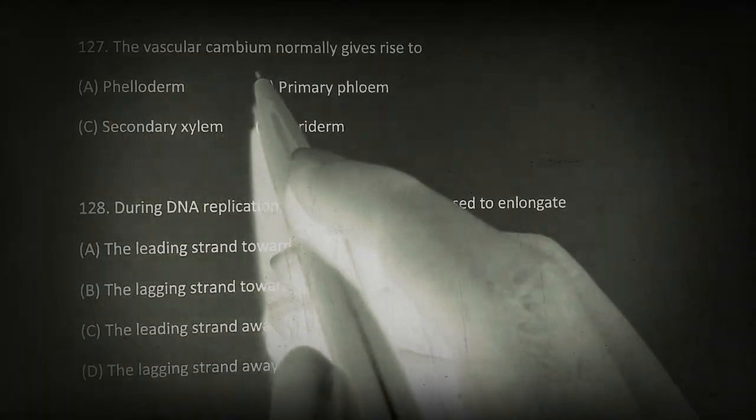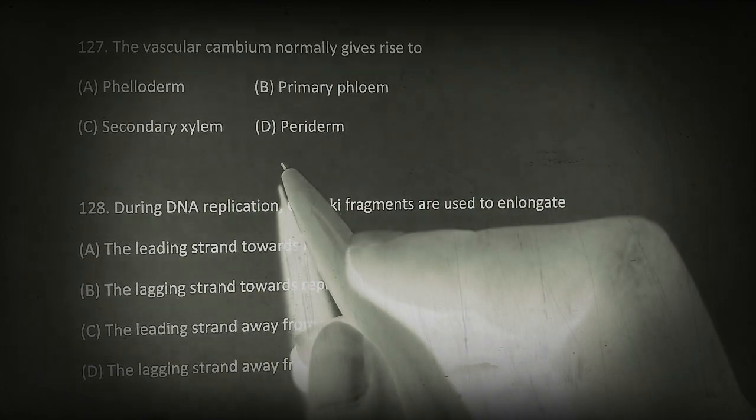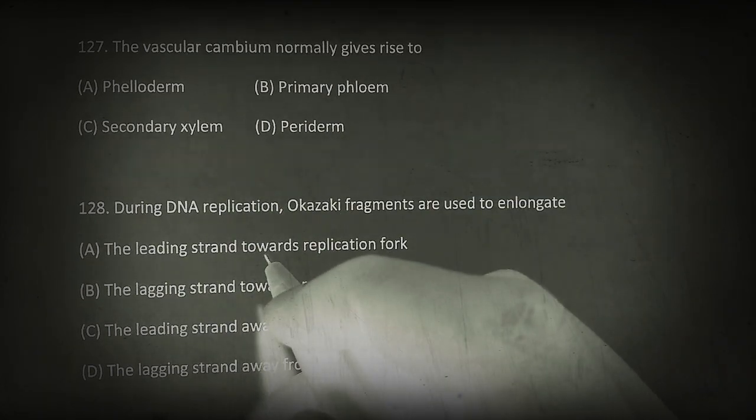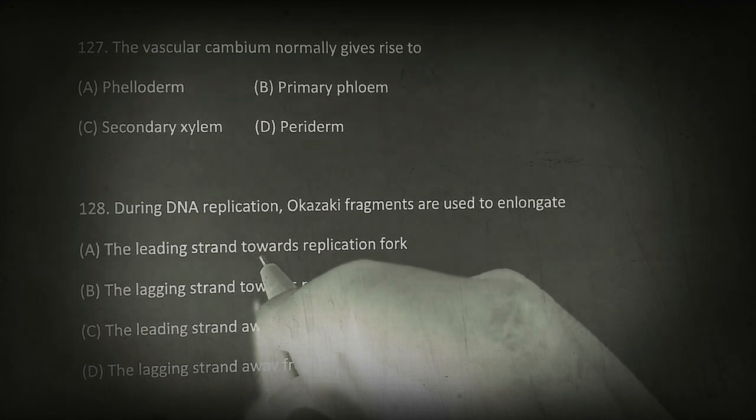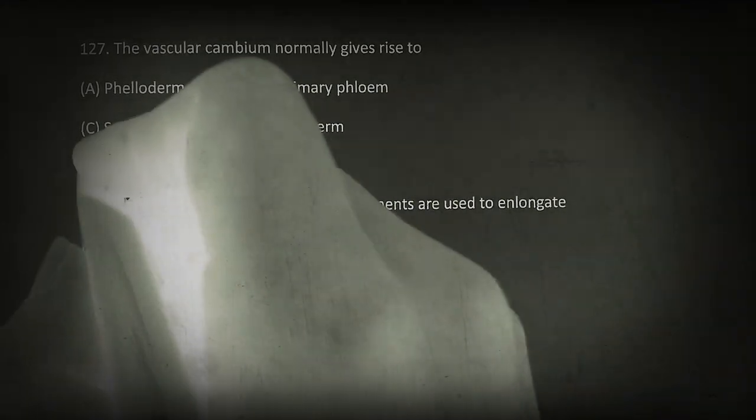The vascular cambium normally gives rise to phelloderm, primary phloem, secondary xylem, or periderm. The cells of the vascular cambium divide periclinally both on the outer and the inner sides to form secondary permanent tissues, that is secondary xylem and secondary phloem. So according to the options, option C is the correct choice.